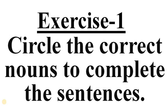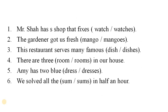Let's move to exercises. The first exercise is: circle the noun to complete sentences. The first sentence is: Mr. sir has a shop that fixes watches or poaches — the correct one is watches. The second is: the gardener got us fresh mangoes — the correct answer is mangoes.